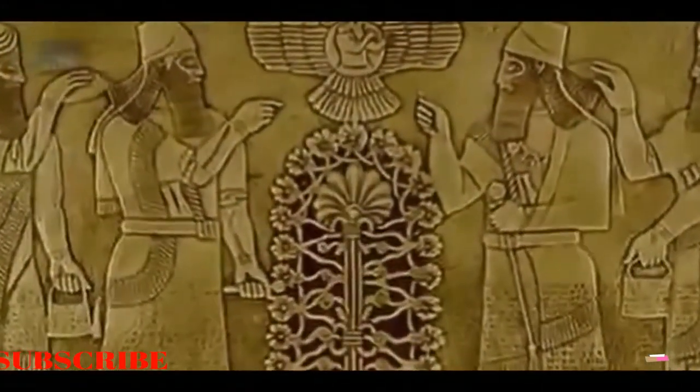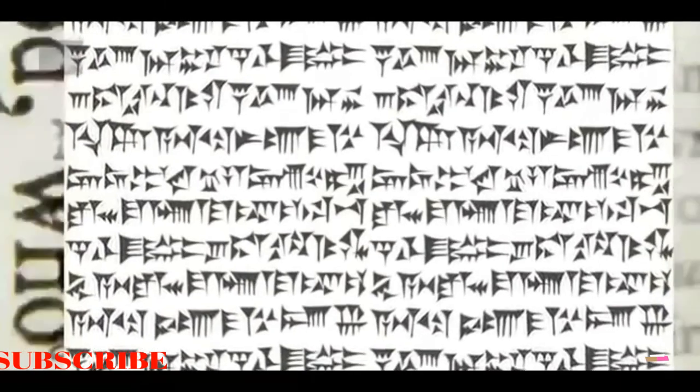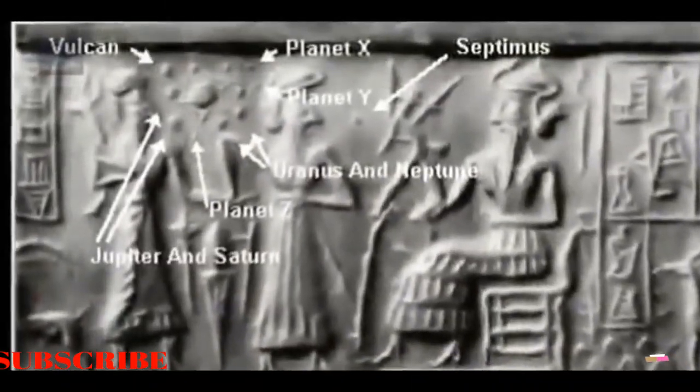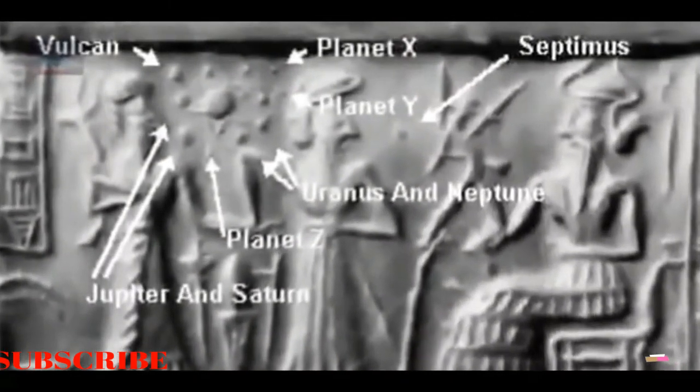Although the Sumerian Astronomical Texts are incredibly difficult to decipher, it has been done. One thing that is there for all to see and easily understood is of course the very famous depictions of Nibiru. This can't be denied, but incredibly we are yet to fully understand astronomy as the ancient Sumerians did all those thousands of years ago.